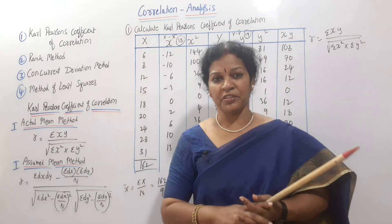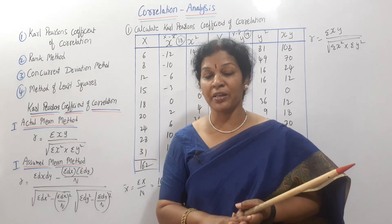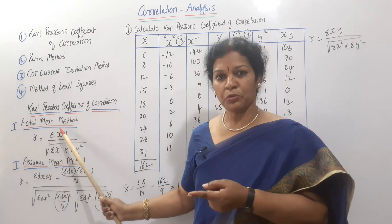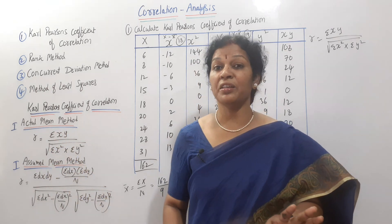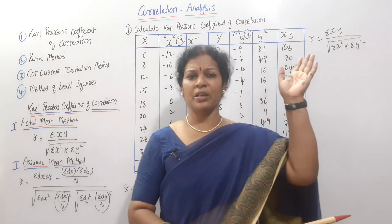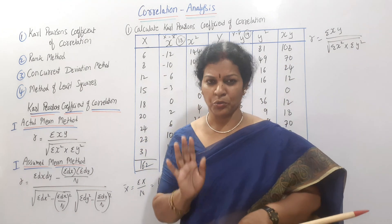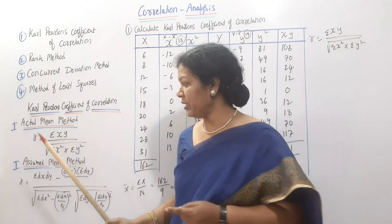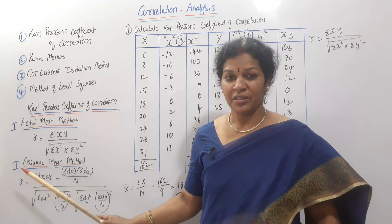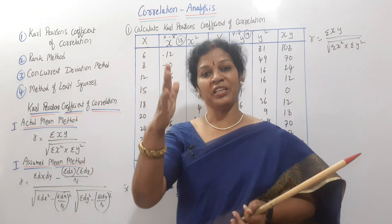This is an important point. If you have to do it in an exam, you can use Carl Pearson's coefficient of correlation with any method. Most of the time, you can follow any method. Today, let's use the actual mean method. Now, let's look at a problem in individual series. Individual series has two variables: X and Y.